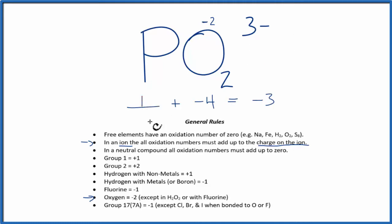So if we had a positive one here and the minus four, that would give us the minus three. So the oxidation number on the phosphorus is plus one.